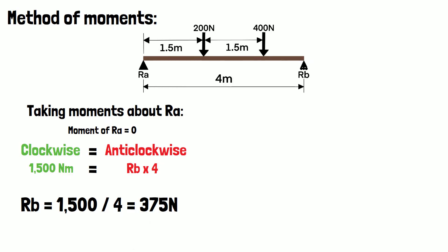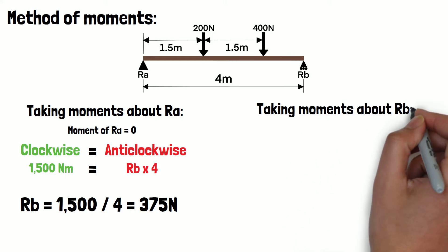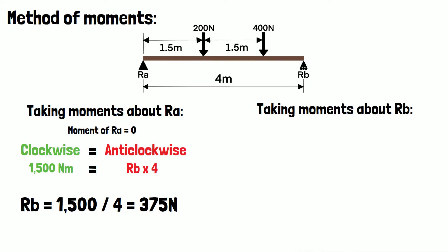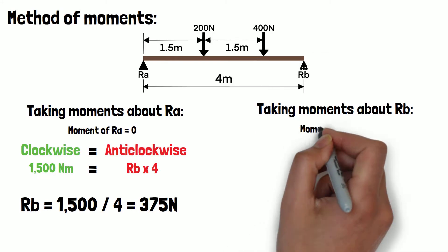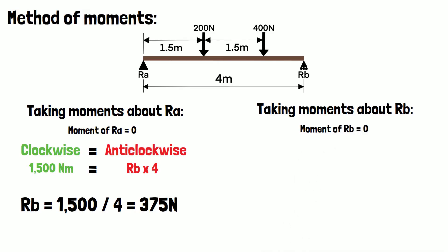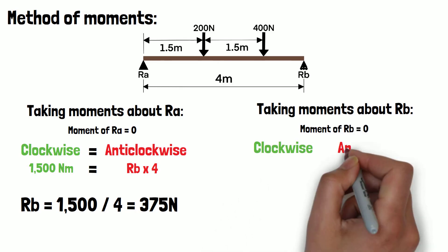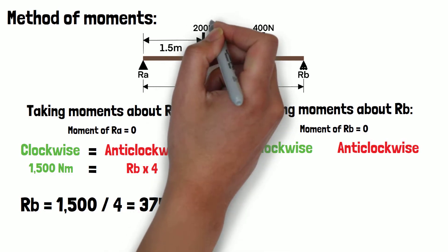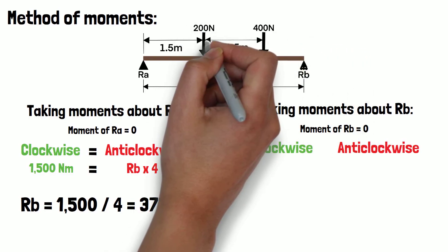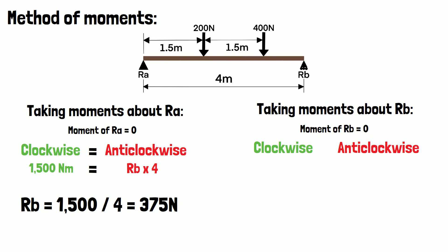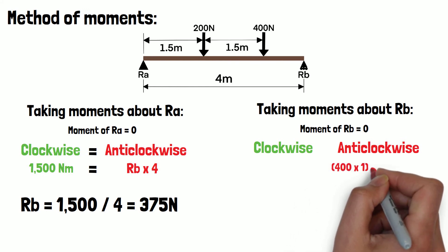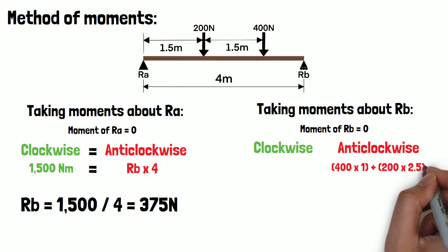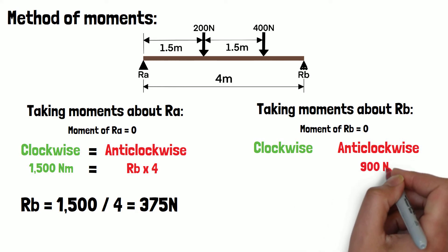We must then repeat this process by taking moments about point RB. As before, the distance of RB is zero so the moments of RB must also be zero. Starting with the anti-clockwise moments this time, we have a 400 newton load at a distance of 1 meter and a 200 newton load at a distance of 2.5 meters. So the total anti-clockwise moments equal 400 times 1 plus 200 times 2.5, which equals 900 newton meters.